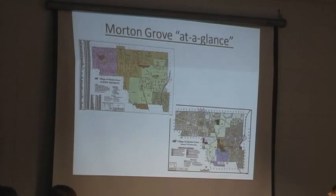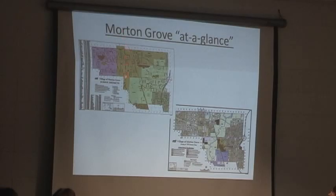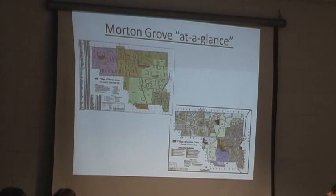The reason that I have that map along with this map — this is a map of the school districts. These are the boundaries of District 67, which, as you can see, is one of the predominant districts in the village. I just wanted to emphasize the overlap of District 67 with the Waukegan Road TIF district. For all intent and purpose, the entire Waukegan Road TIF district is within School District 67 boundaries, right in this area. So that is a point I wanted to emphasize to you.